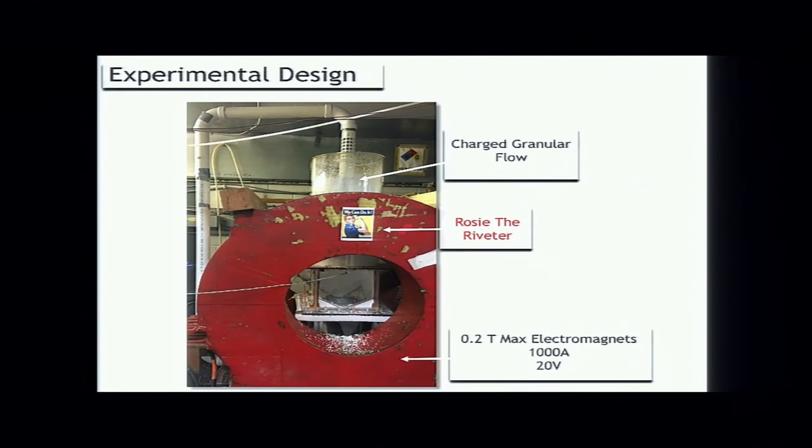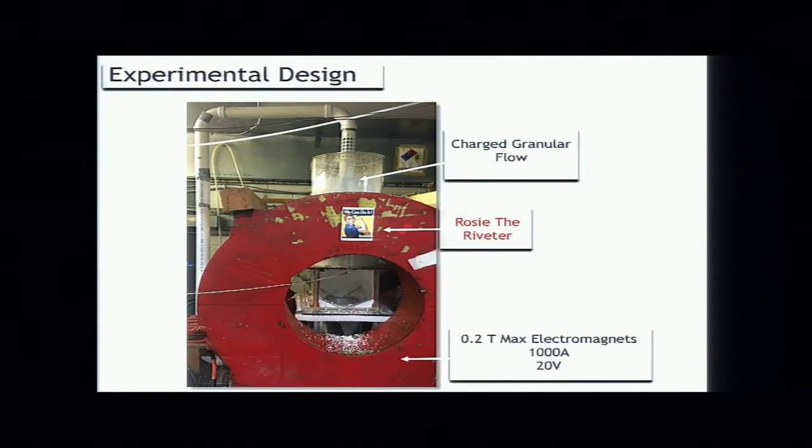To measure the Hall effect, I put this whole setup in between two electromagnets. These are two big Helmholtz coils. There's one big red ring in the front and another red ring in the back that we can't see. You turn on the airflow down here, and then we get a charged granular flow. The maximum field is 0.2 Tesla.